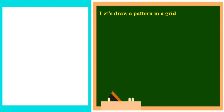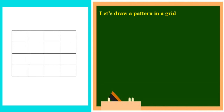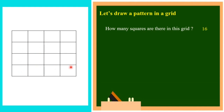Let's draw a pattern in a grid. There will be a square grid but you have to find out a pattern in the grid. We have to draw a pattern by coloring some of the squares. How many squares are there in this grid? Counting — 4, 8, 12, 16 — so there are 16 squares. Next, color the diagonal grids. This is the diagonal — we can color in this diagonal direction.